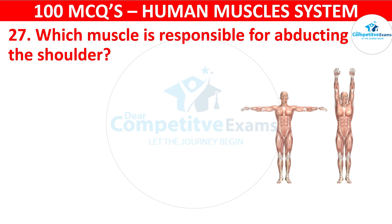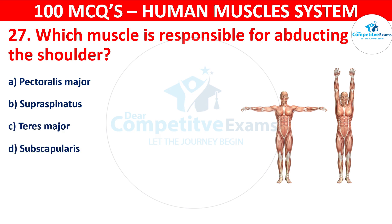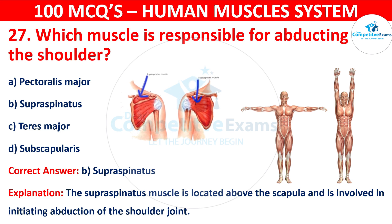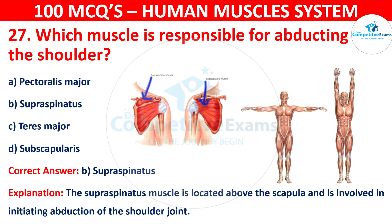Question 27. Which muscle is responsible for abducting the shoulder? Your options are Pectoralis major, Supraspinatus, Teres major, or Subscapularis. The correct answer is B, i.e. Supraspinatus. The Supraspinatus muscle is located above the scapula and is involved in initiating abduction of the shoulder joint.